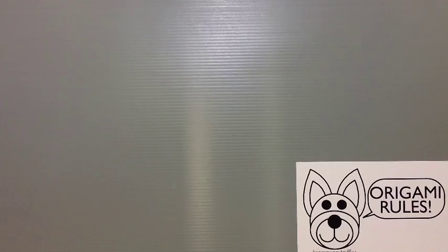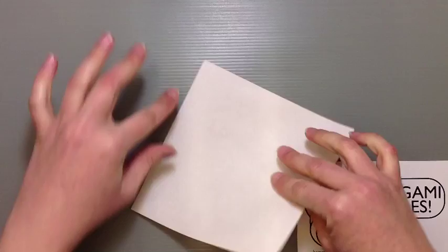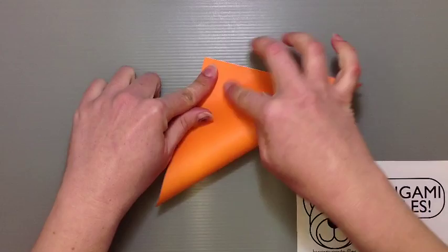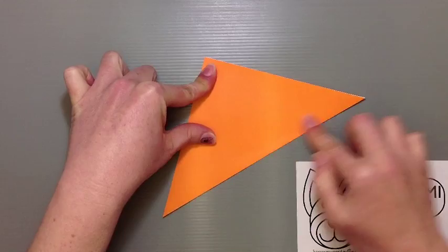Let's start off here with our paper. I want to have the color side facing down. Fold the paper in half - take both of those opposite ends so we can make a big triangle. Smooth straight down from the center down to each of the edges so that we can get a nice big triangle.